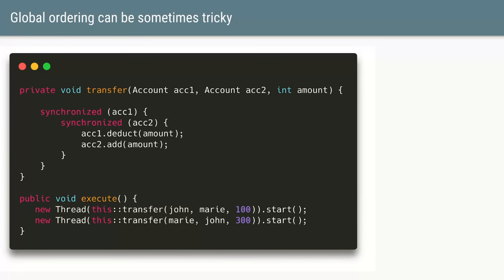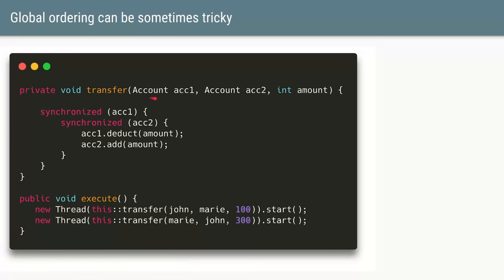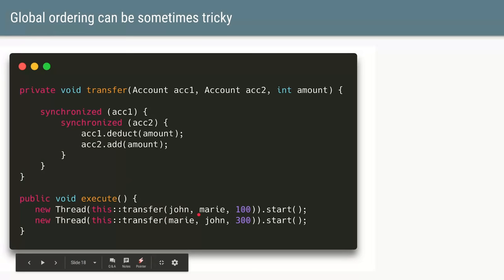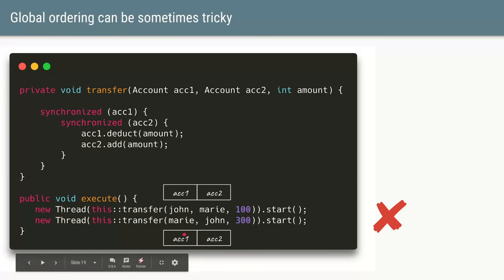However, global lock ordering can sometimes be tricky. Consider a transfer() method that transfers money from account one to account two — it acquires locks on both accounts. If Thread 1 transfers $100 from John to Murray, and Thread 2 simultaneously transfers $300 from Murray to John, then in Thread 1 account one is John and in Thread 2 account one is Murray — so we again have inconsistent lock ordering.